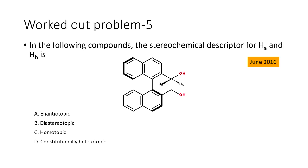Let us move on to the next problem. In the following compound, we need to determine the stereochemical descriptors HA and HB — the relationship between these two hydrogen atoms — whether they are enantiotopic, diastereotopic, homotopic, or constitutionally heterotopic.